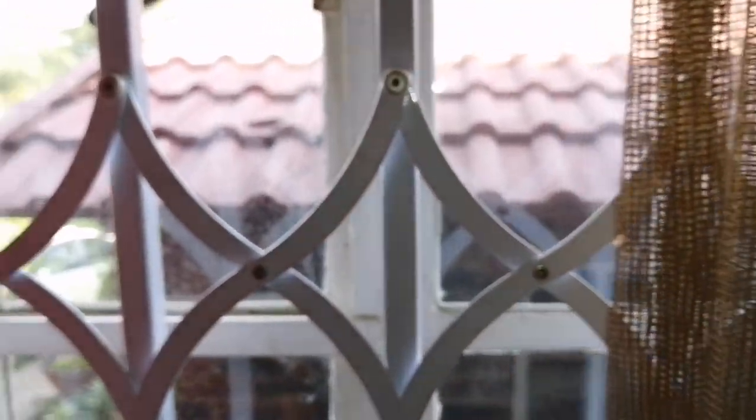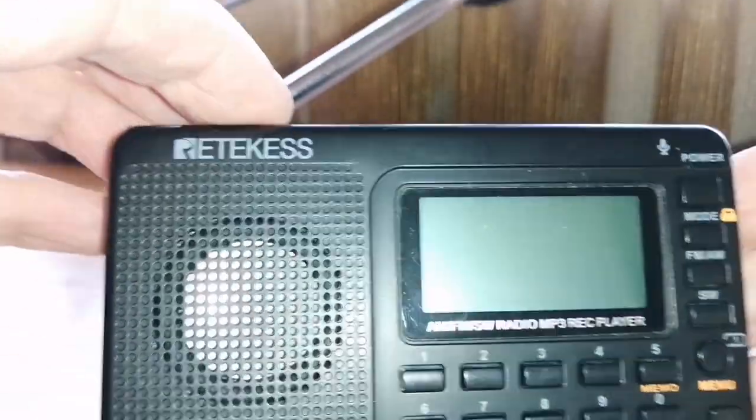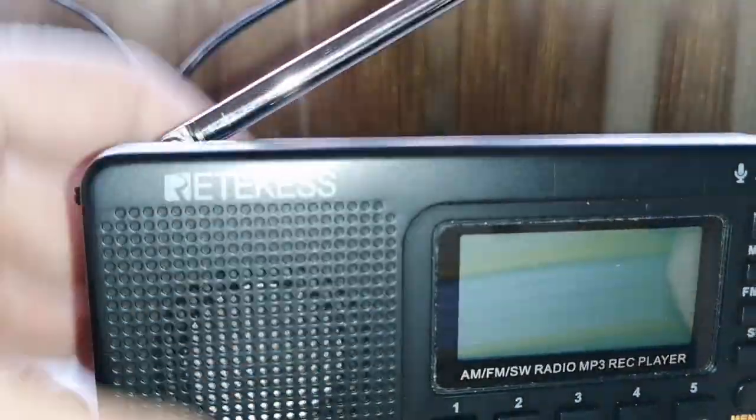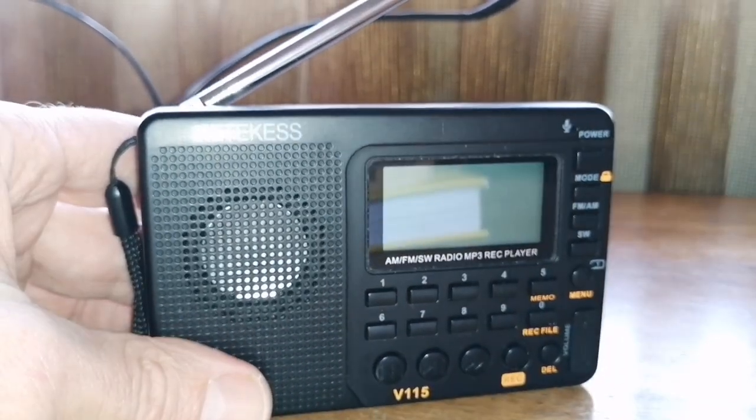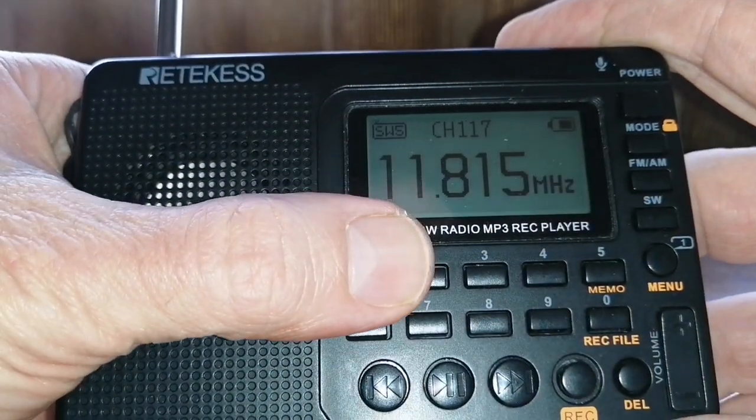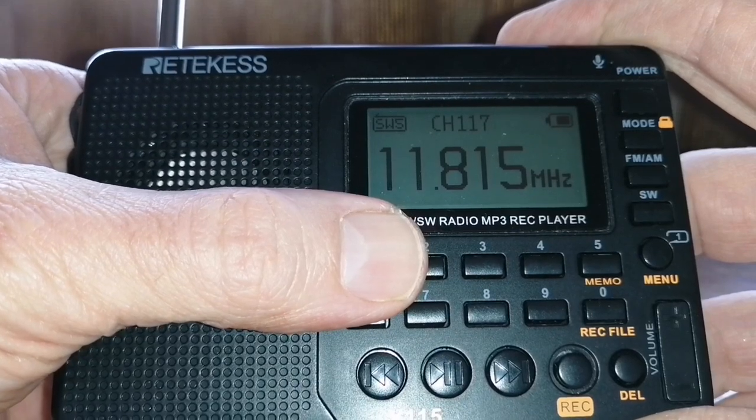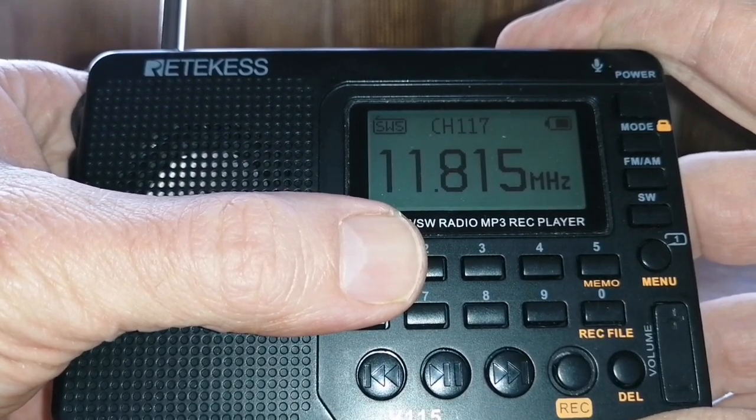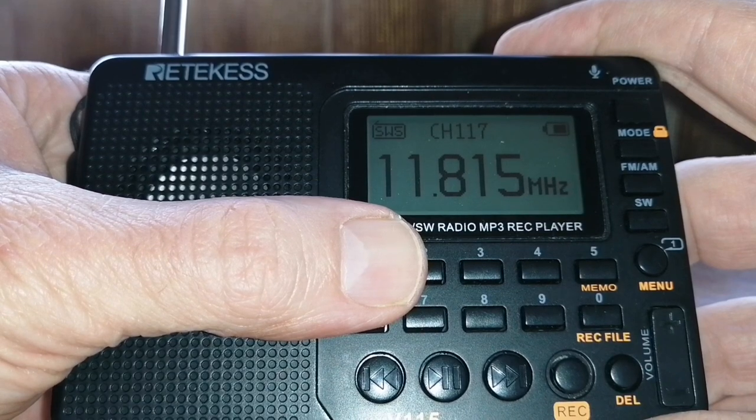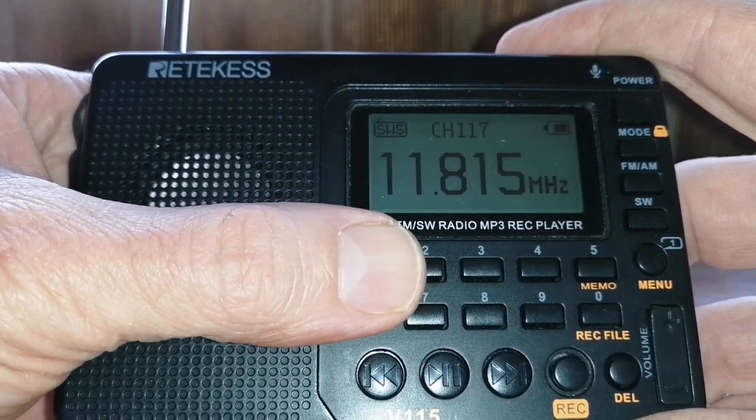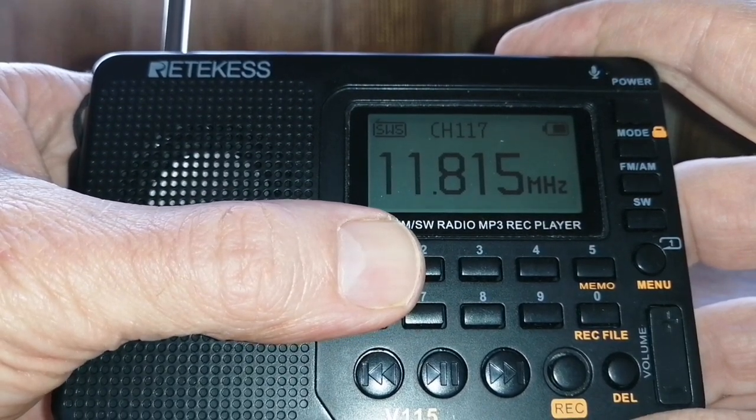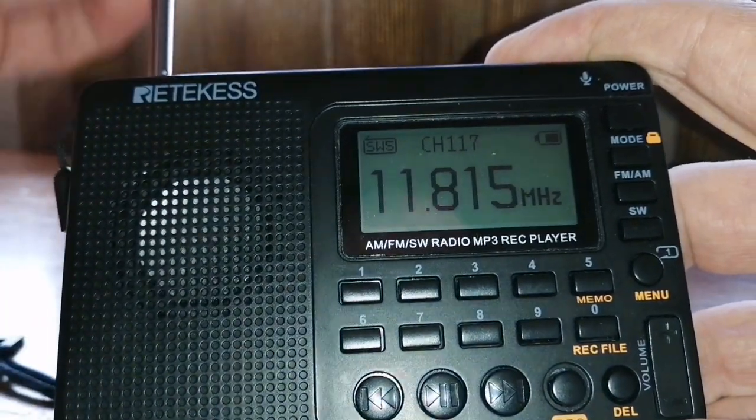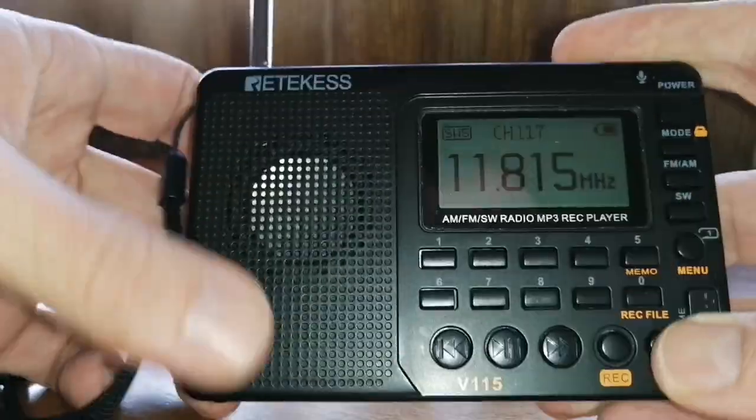Right. So as you can see, I've got the wire here out of the window and up on the roof. We will now find a weak station, see what happens without the wire and what happens with the wire. All right. So on 11815, it is NHK from Japan, from Yamata in Japan. The time now is 1255 UTC, 1455 my local time, Central African time. So it's daytime still. And on the Reticus I'm cooling up the antenna.